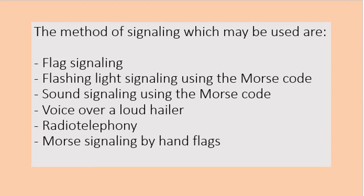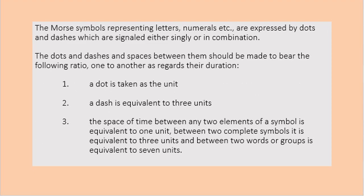There are many ways of signaling. Here we are just focusing on flashing light signaling using the Morse code. A dot or dit is taken as a unit. A dash or dah is equivalent to 3 units. The space between two elements of a symbol is equivalent to 1 unit. The space between two complete symbols is equivalent to 3 units, and between two words or groups is equivalent to 7 units.